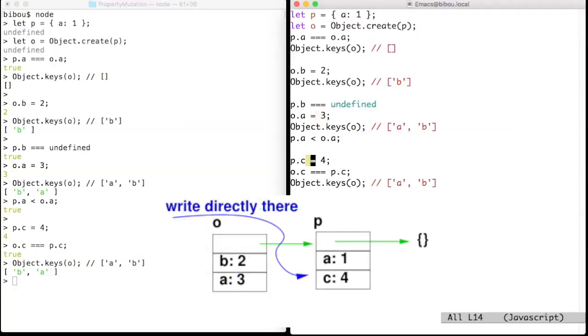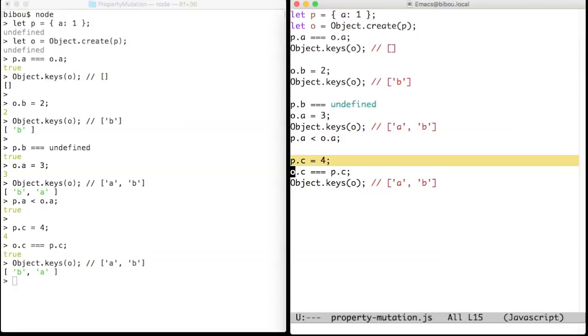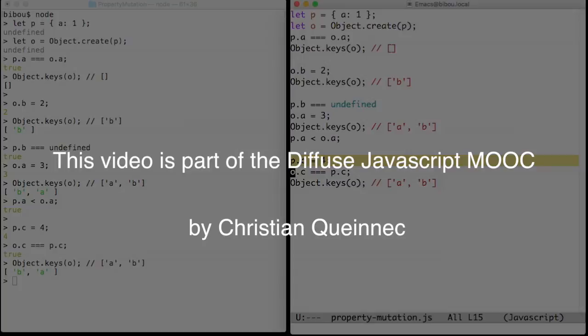If we directly modify the prototype and create a new key C, for instance, O inherits from its prototype and O dot C is equal to 4. So, writing in an object or in its prototype does not impact the same set of objects.